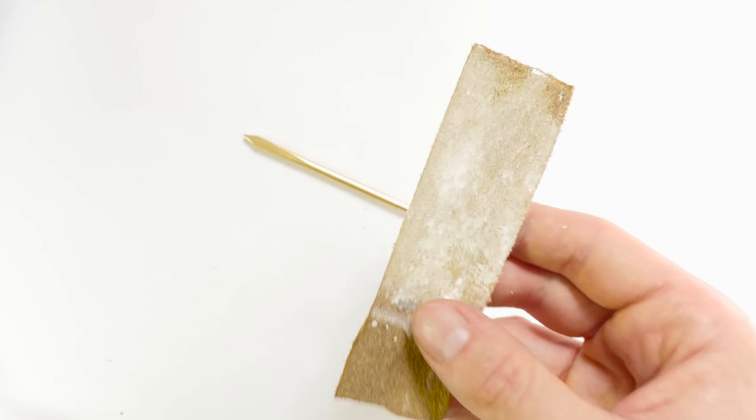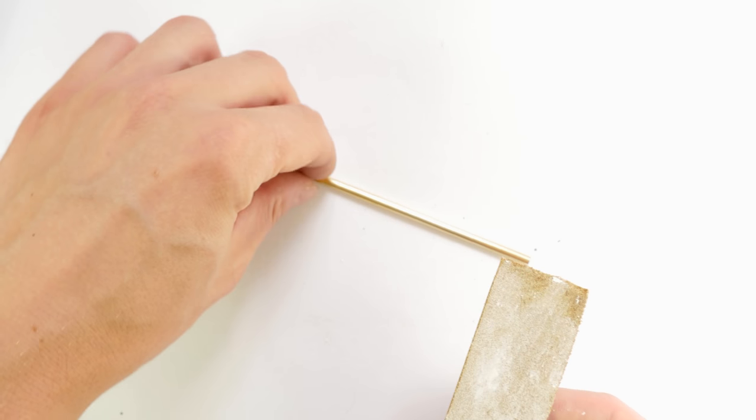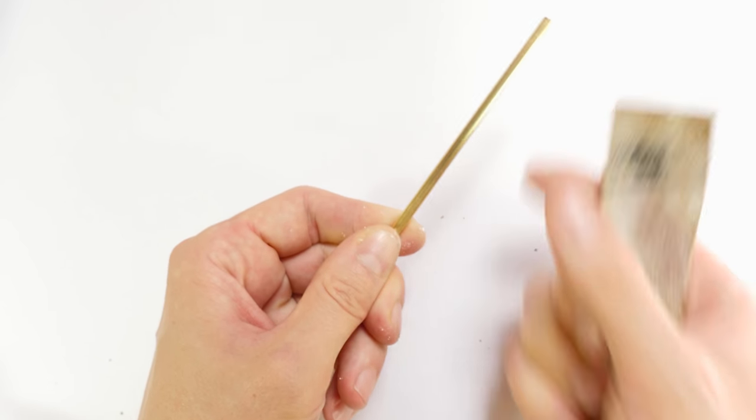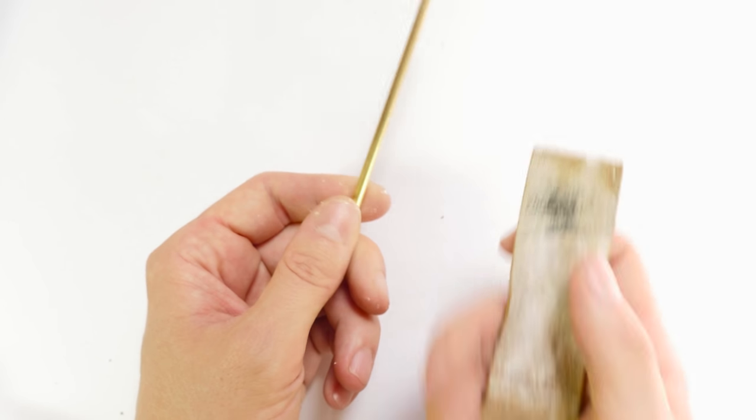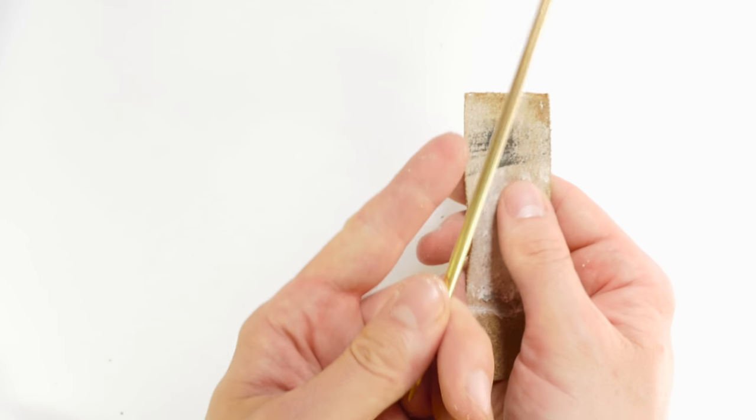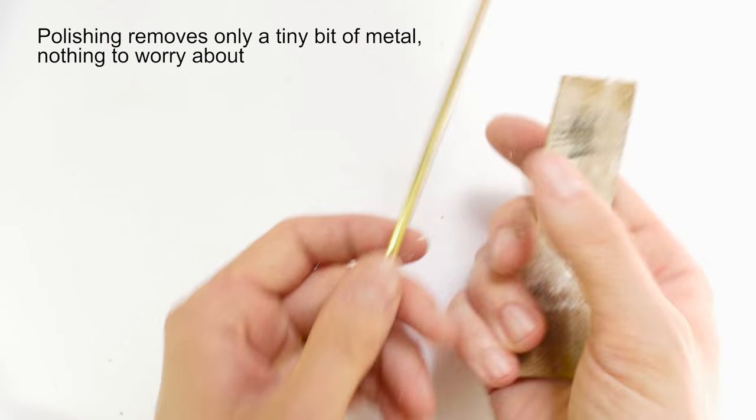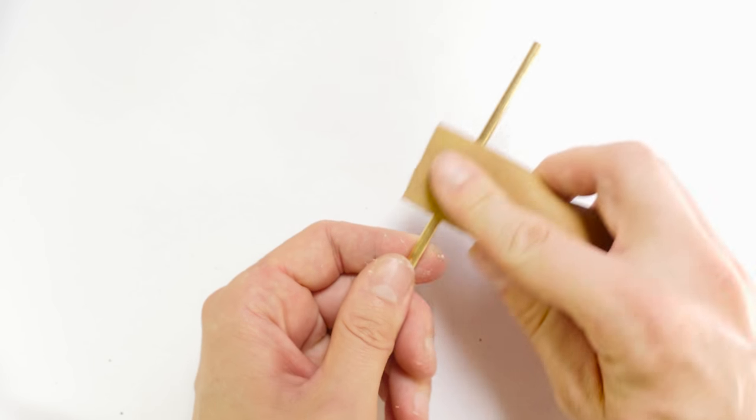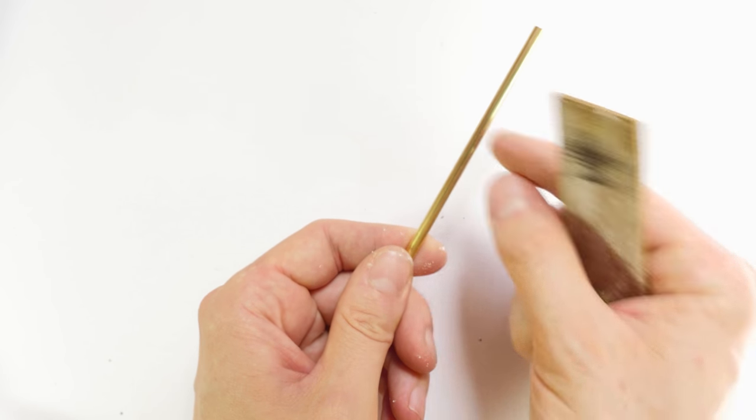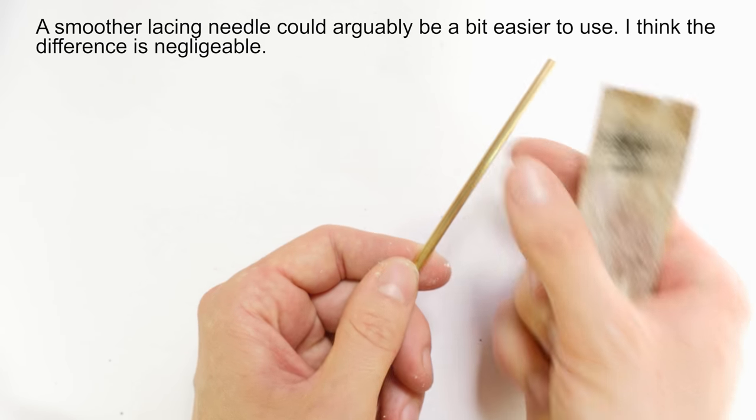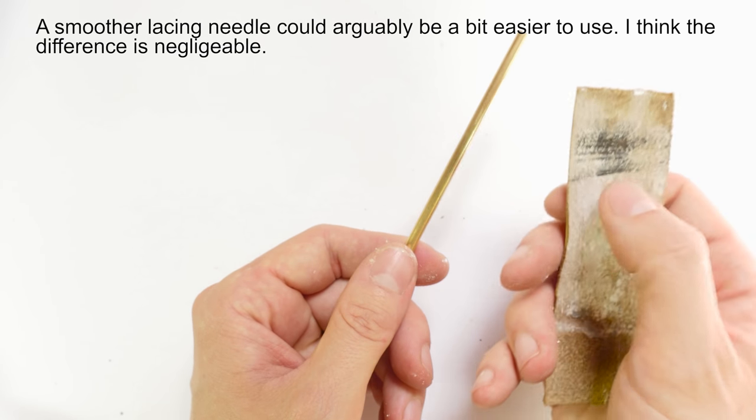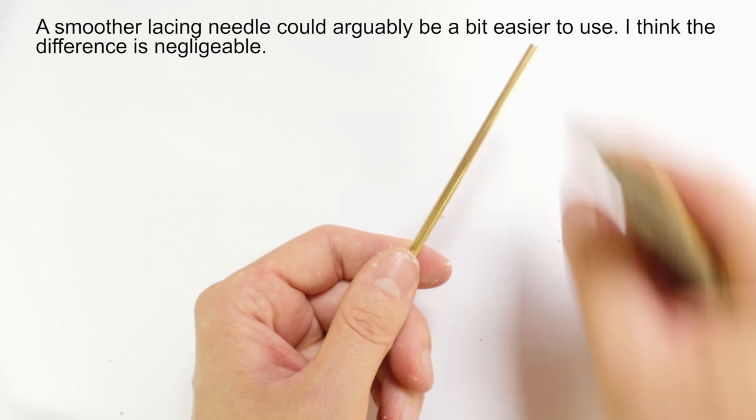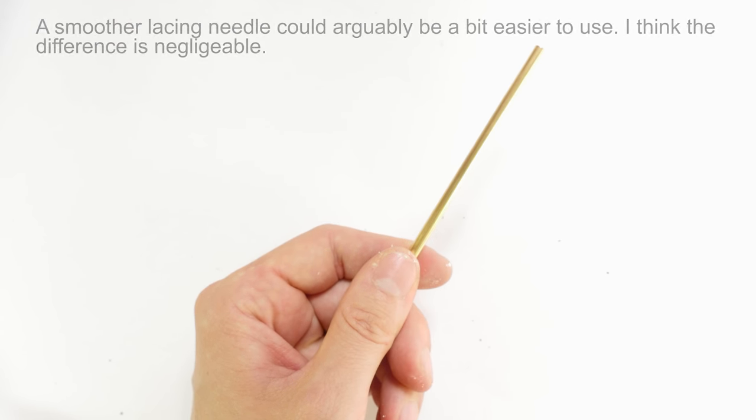After applying my polishing compound I again do the same thing. Keep rubbing until I get a mirror shine. You can see that I am removing metal away from the lacing needle and this is going to make it shinier as well as much smoother. So there is some utility to this. When you polish up a lacing needle you're going to make it smoother and glide a bit easier through the cords.